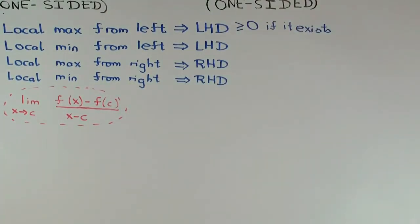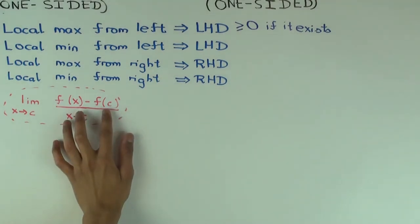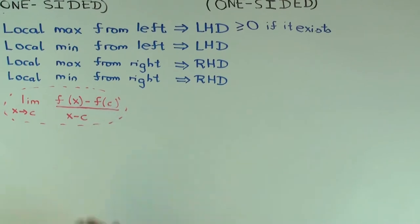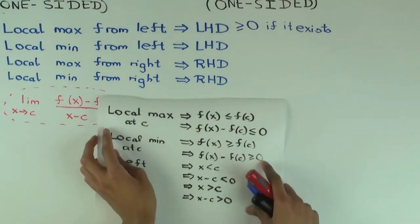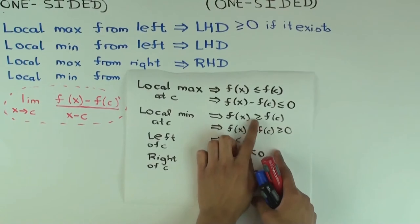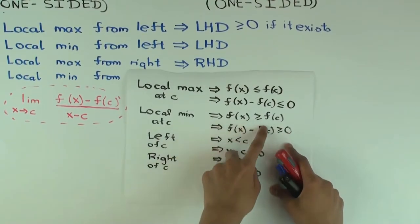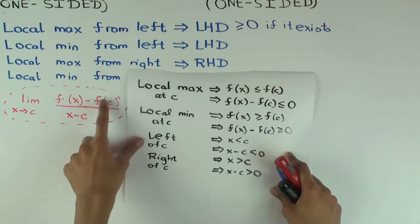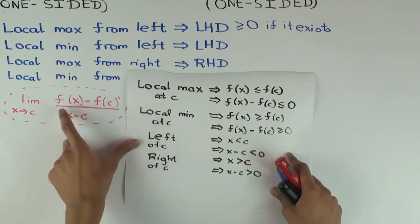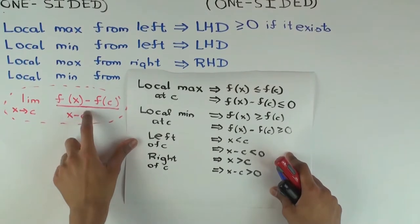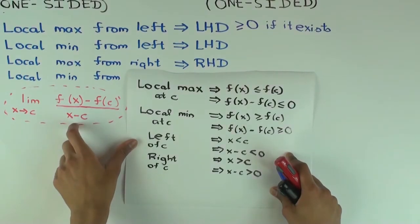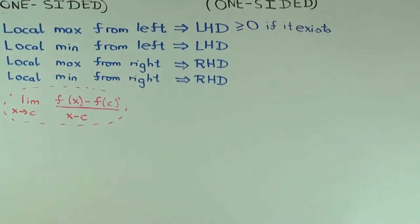Now local minimum from the left. That means f(c) is less than or equal to values on the immediate left — so f(x) ≥ f(c) for x immediately to the left of c. So f(x) − f(c) ≥ 0, meaning the numerator is greater than or equal to zero. The denominator is less than zero, so the quotient is less than or equal to zero. The limit is less than or equal to zero if it exists.